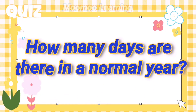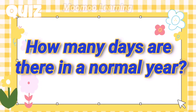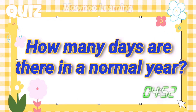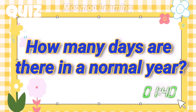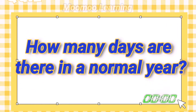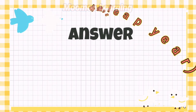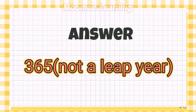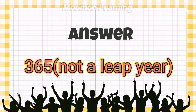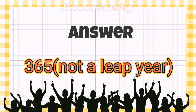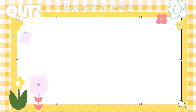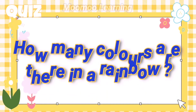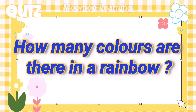How many days are there in a normal year? Answer: 365 days.